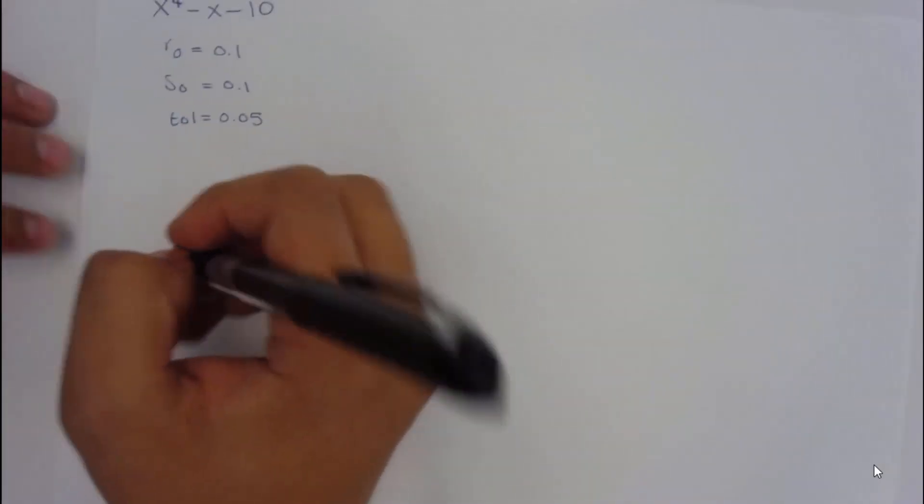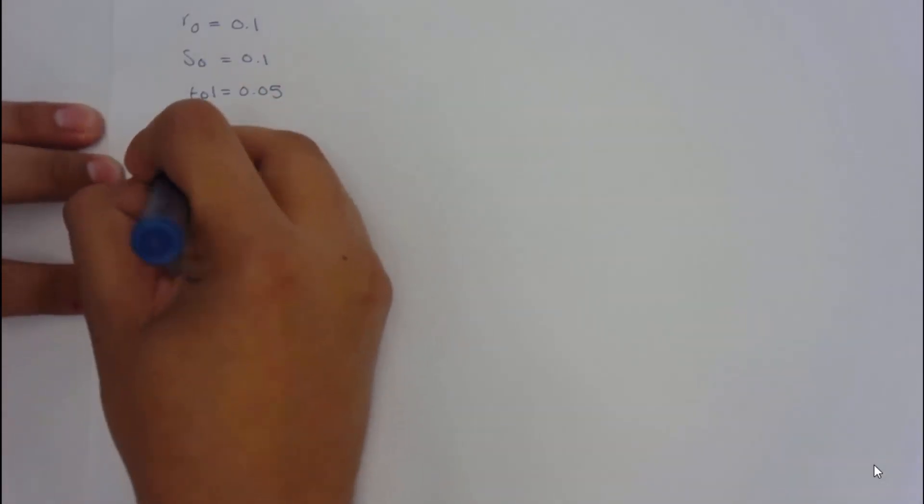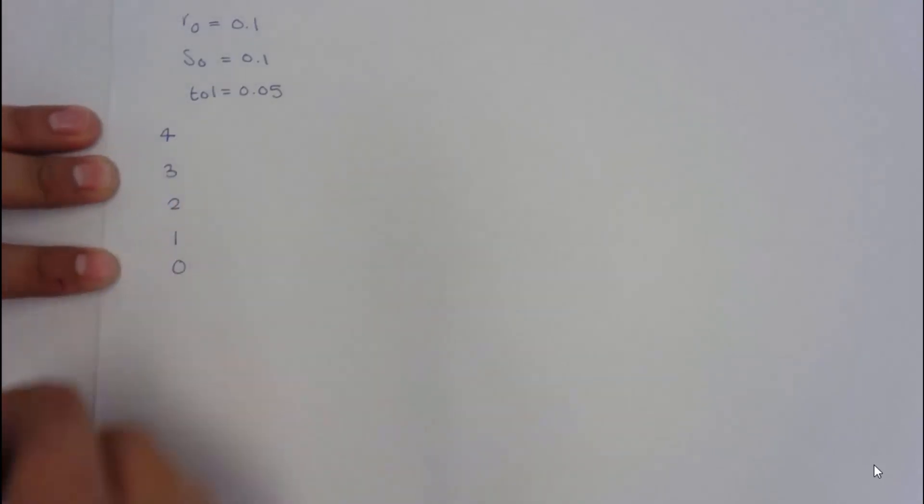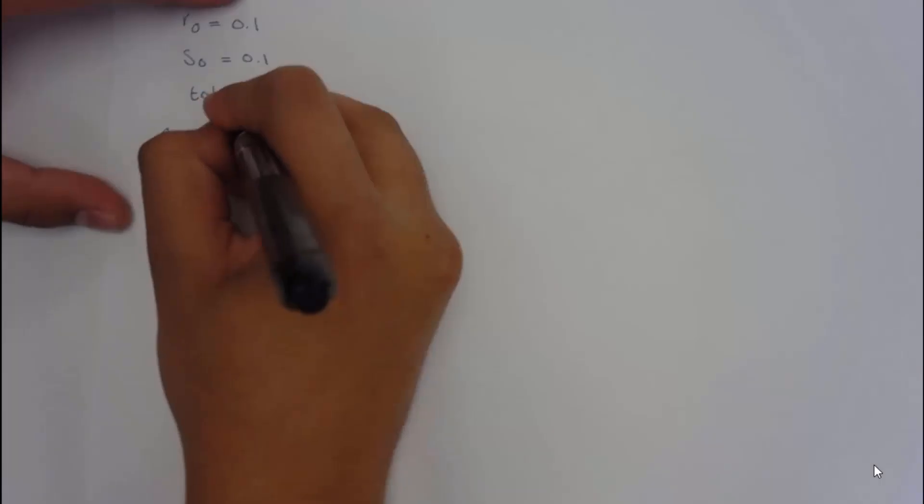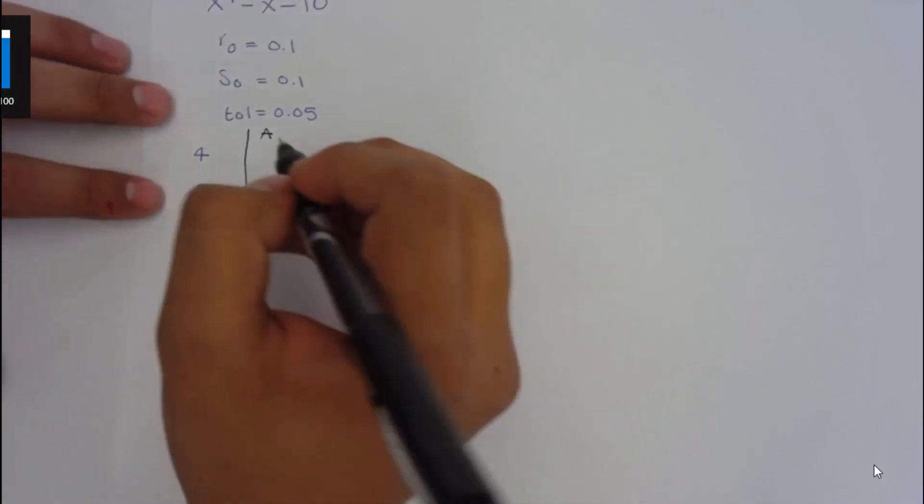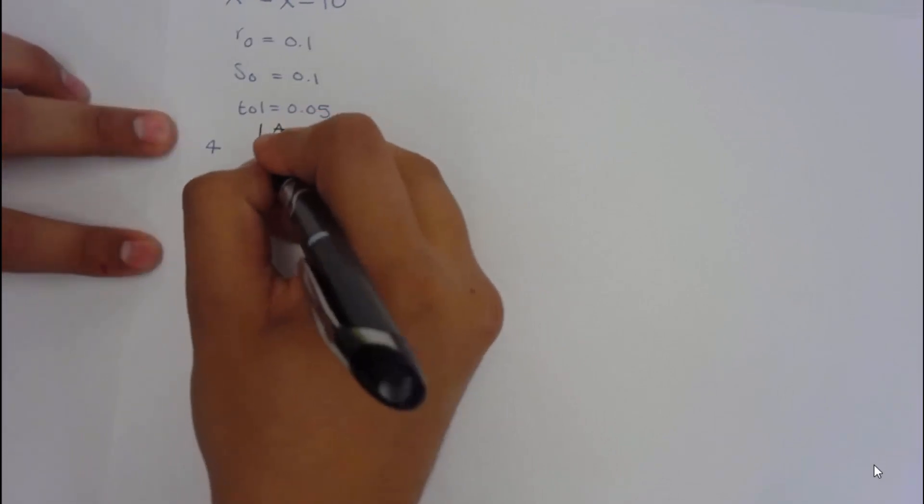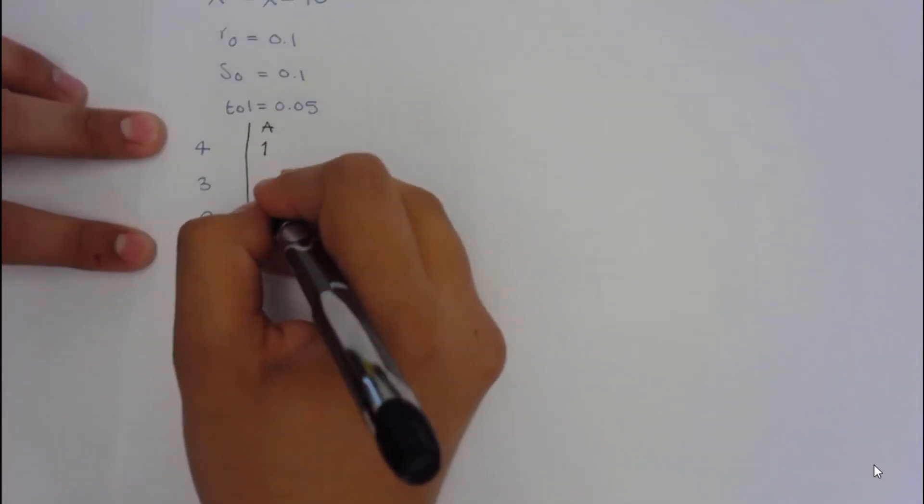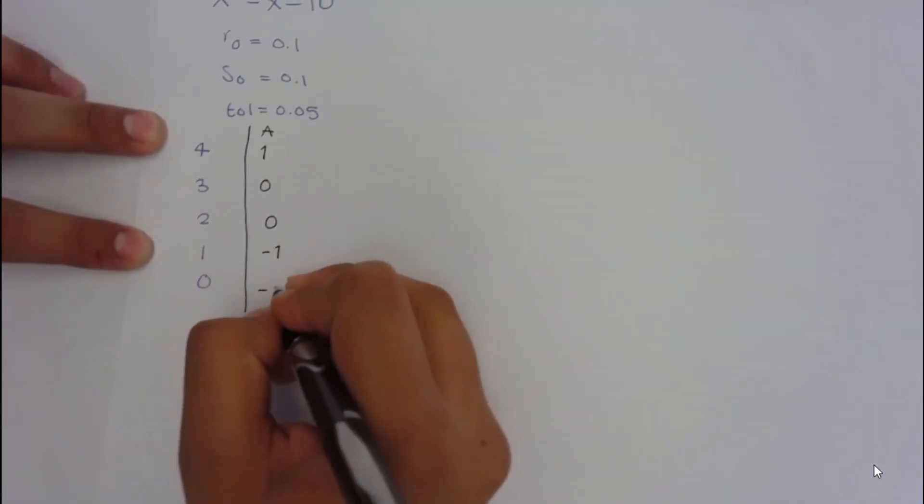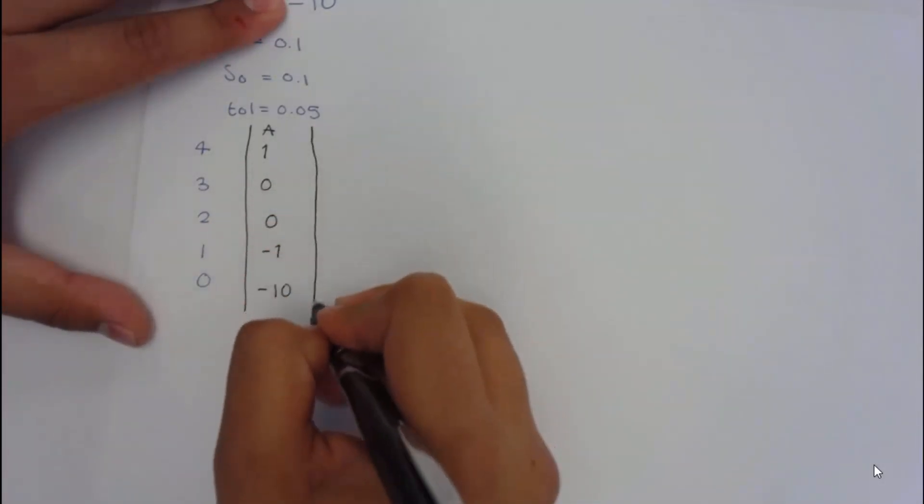So, what we will do first is that I'll write my order of the equation here. This will help me later. And now, I'm going to start by adding the a values. My a values will be basically the number before, or the coefficient. So, since we don't have an x to the 3, it would be 0. Same for x squared. We have a minus 1 here, and a minus 10. So, this will be the same for all iterations.